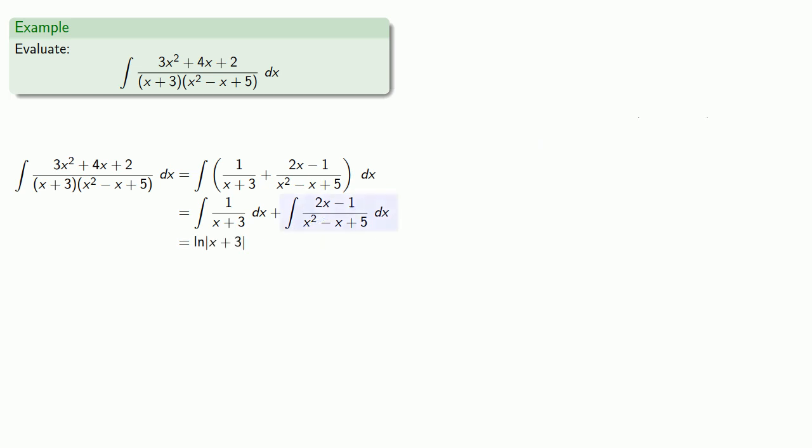The second integral will let u equals x² - x + 5, and so du will be 2x - 1. And luckily enough, that's exactly what our numerator is, so we can do a u substitution.